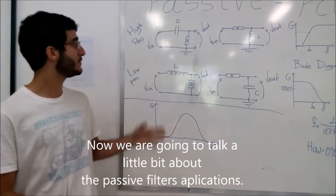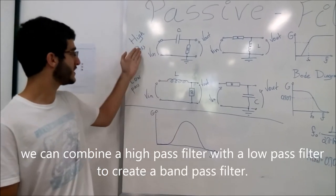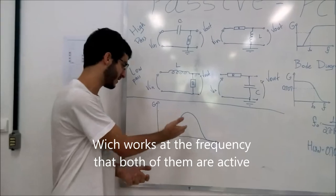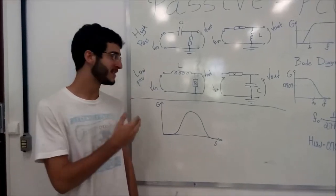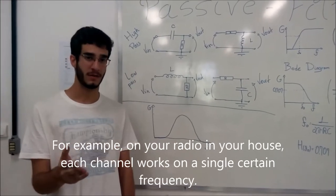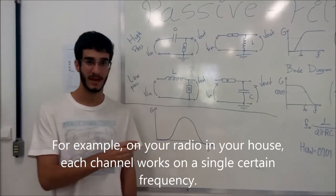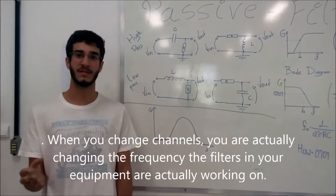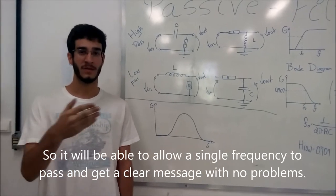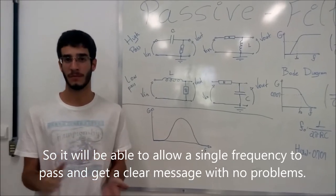Now we are going to talk a little bit about these passive filters applications. But first, we need to explain something. We can combine two filters, a high-pass filter to a low-pass filter, to create a band-pass filter, which works on the frequencies that both of them are active. With this technique, we are able to get a single frequency with certain information. For example, on your radio in your house, each channel works on a certain frequency. And when you change the channels, they are actually changing frequencies. The filters in your equipment are actually working, so it will be able to allow a single frequency to pass and get a clear message with no problems.